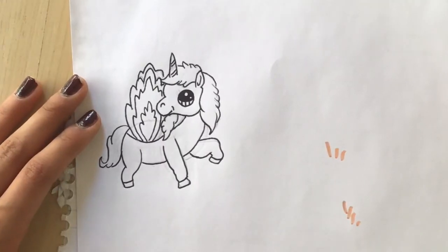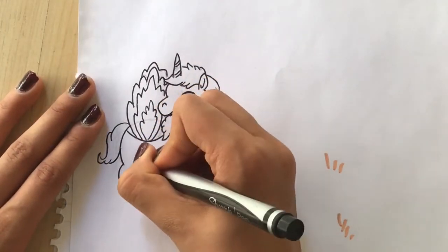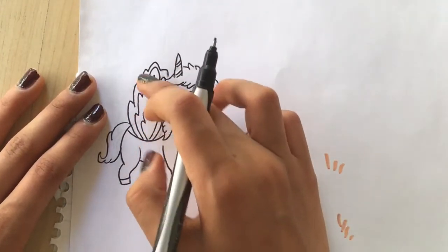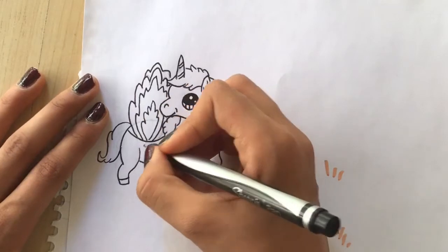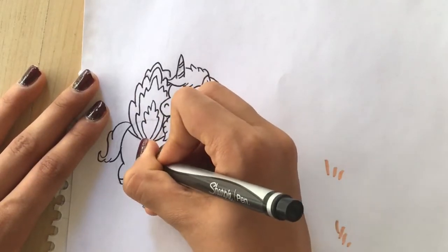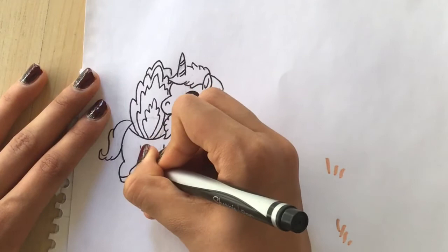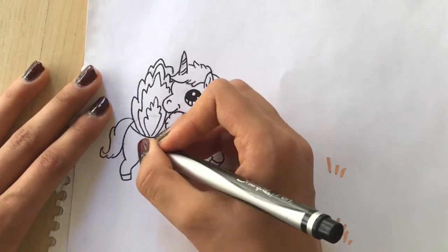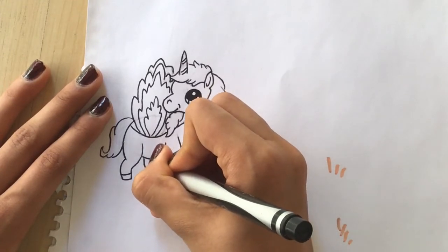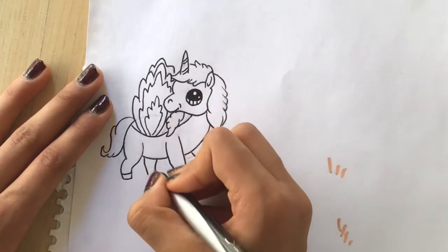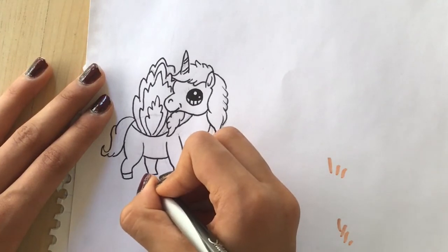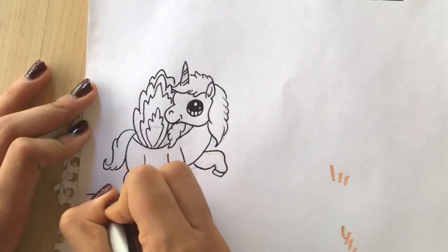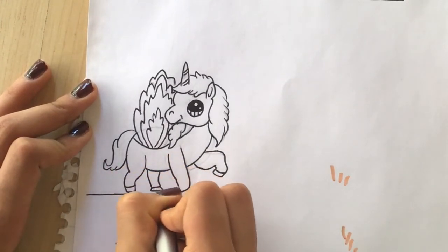One more thing I forgot to mention was that you're going to need to draw the last leg down there. The last leg will be a slanted line down here, another slanted line down here, curved line. And you can draw the ground.